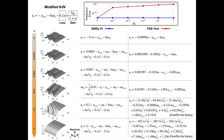For example, when G0 is small, PDE-FIND adds a constant term to the final model to compensate for the rational dynamics. When the value of G0 is too large, PDE-FIND starts to overfit the library and cannot identify the correct models. Thus, SINDy-Pi is better at handling rational PDEs than PDE-FIND.